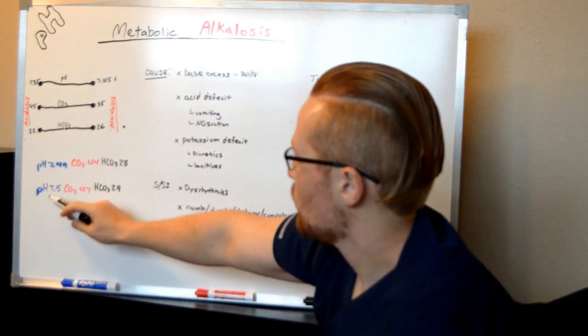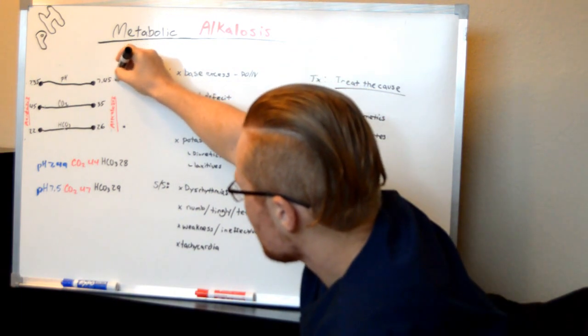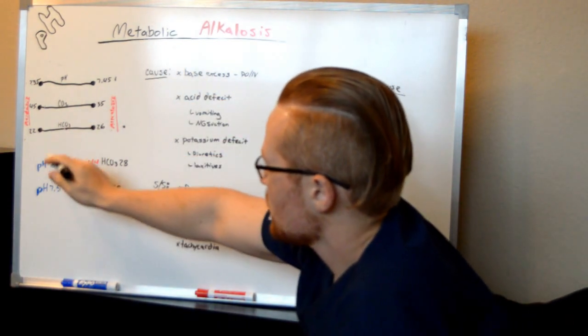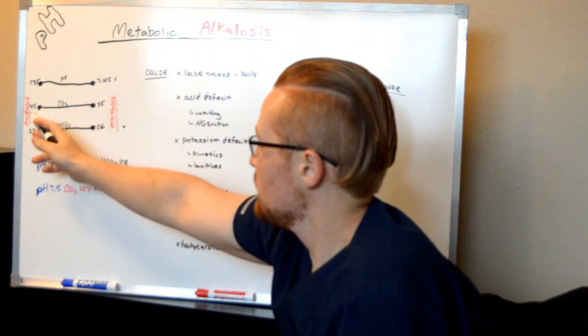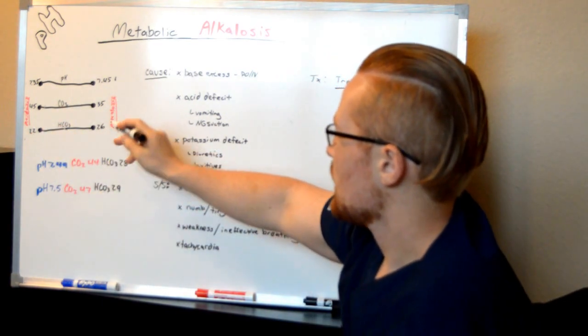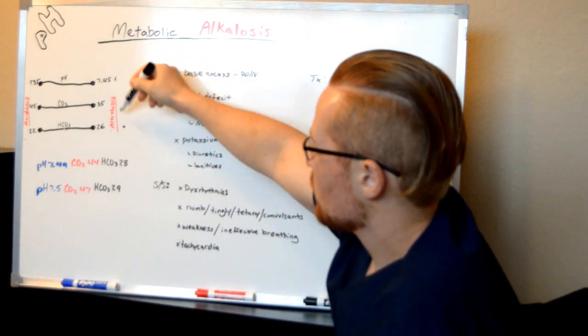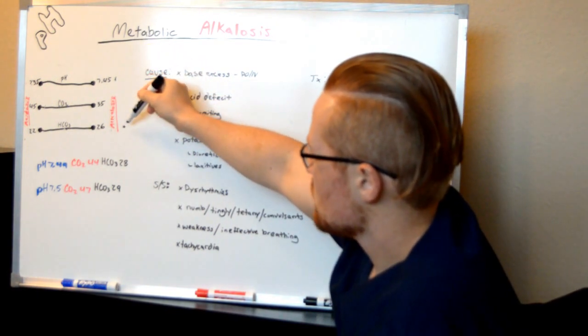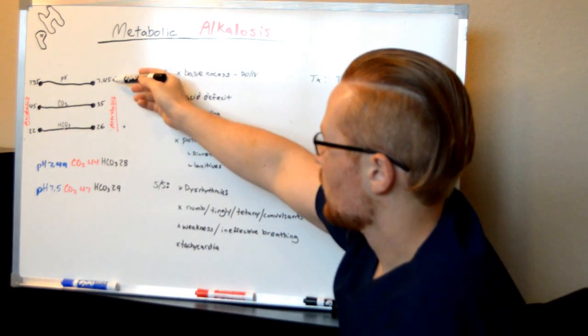Another example: pH is 7.5, on the alkalotic side. CO2 is 47, that's acidic. Bicarb is 29, alkalotic. What matches? Alkalotic and alkalotic. So this is also metabolic alkalosis.